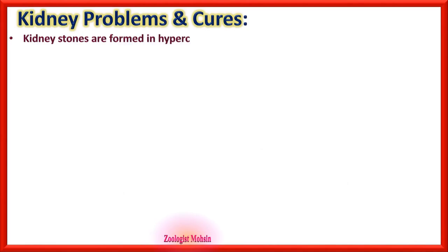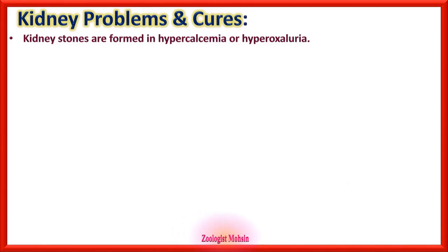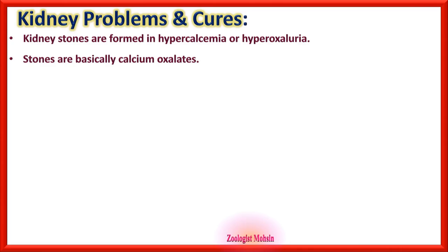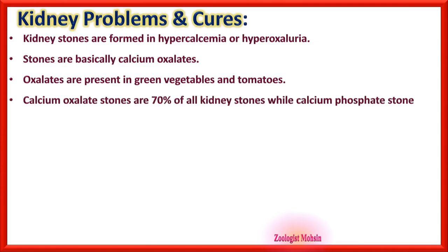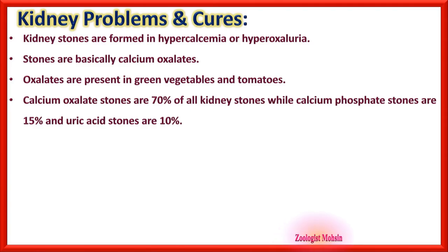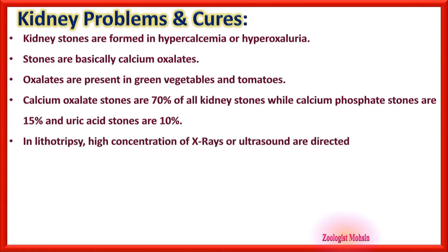Kidney stones are formed in hypercalcemia (high calcium) or hyperoxaluria (high oxalate salts). Stones are basically calcium oxalates; oxalates are present in green vegetables and tomatoes. Calcium oxalate stones are 70% of all kidney stone types; calcium phosphate stones are 15%; uric acid stones constitute about 10% of all kidney stones.